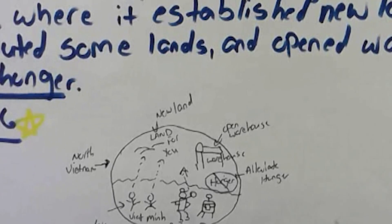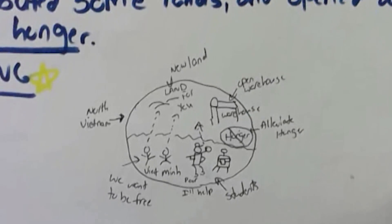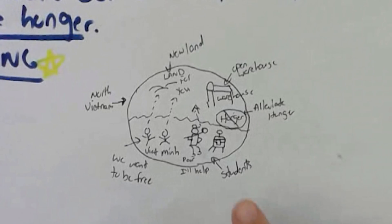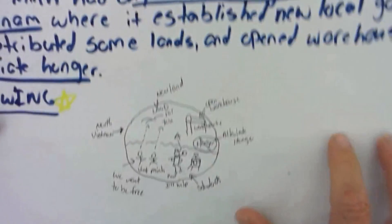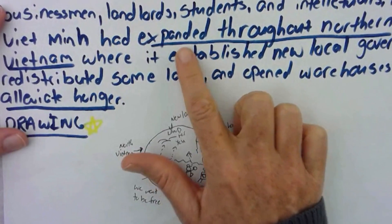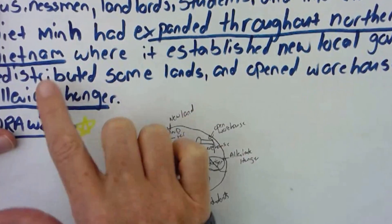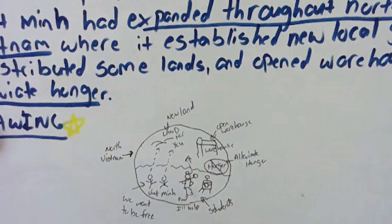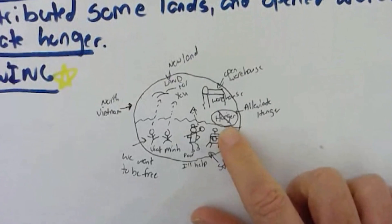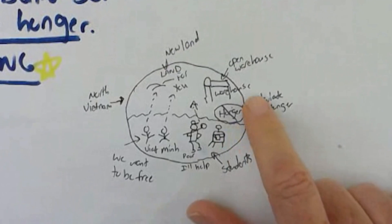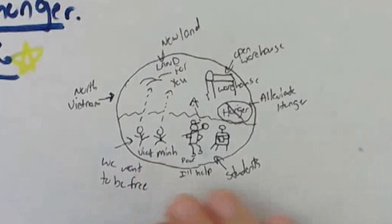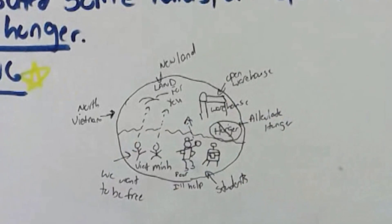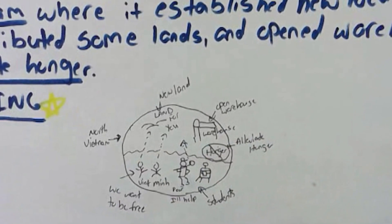That is exactly what the student drew. Here's a picture the student drew about the Viet Minh expanding throughout northern Vietnam to alleviate hunger. We have a little hunger icon that's crossed out because we're alleviating hunger, some open warehouses, and some new land. The student drew what they thought that meant, and they labeled the drawing with words from the text.